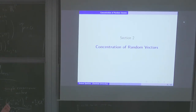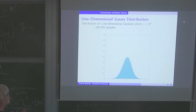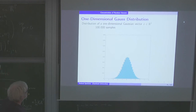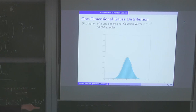Let me give you a few pictures of this concentration of random vectors. I'm looking here at the Gaussian distribution — this is the one-dimensional Gaussian distribution. I take a vector which is Gaussian-distributed with variance one, draw the histogram, and take one hundred thousand samples. Even in one dimension, to get a good picture of the normal distribution you have to sample really many.